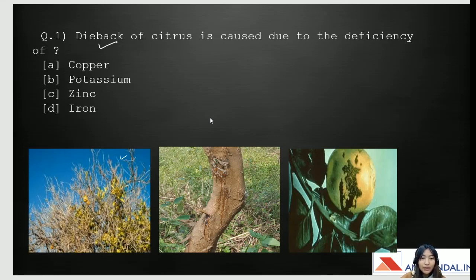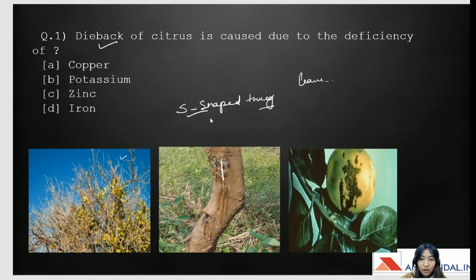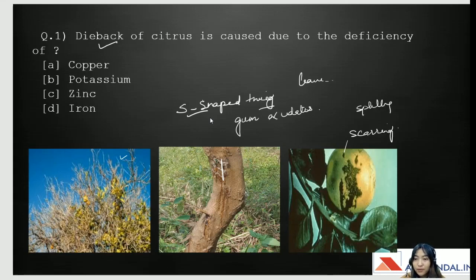The leaves become pale and dark green and are born on S-shaped twigs. There will be a slit in the bark of the tree, and in severe cases there may be gummosis — gum exudates from the bark. The fruits become scarred, and in severe cases there might be splitting of the fruits as well. This is mostly common in very young trees.